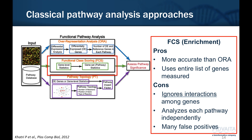A slight improvement on that enrichment analysis approach is what's called functional class scoring. You may have encountered gene set enrichment analysis, or GSEA, which was pioneered by the Broad Institute. In this model, it is more accurate than simple enrichment because we use the entire list of genes that were measured, supply the p-values in ranked order, and may provide weighted scoring based on those p-value significance measurements. But because this is still based on an enrichment model, it still ignores the interactions among genes on the pathway — it's still a count-based model — and as a result can lead to a lot of false positives.